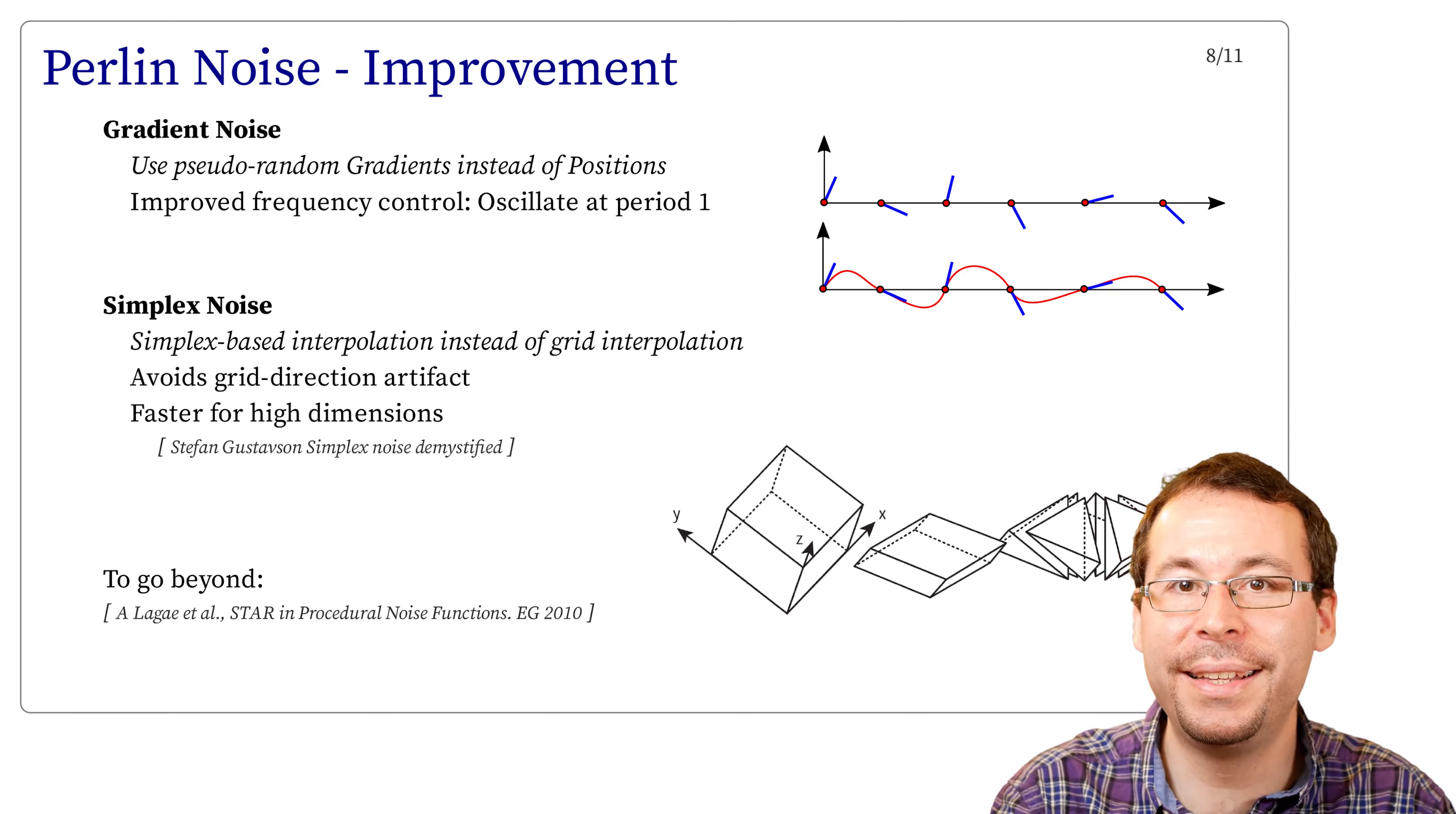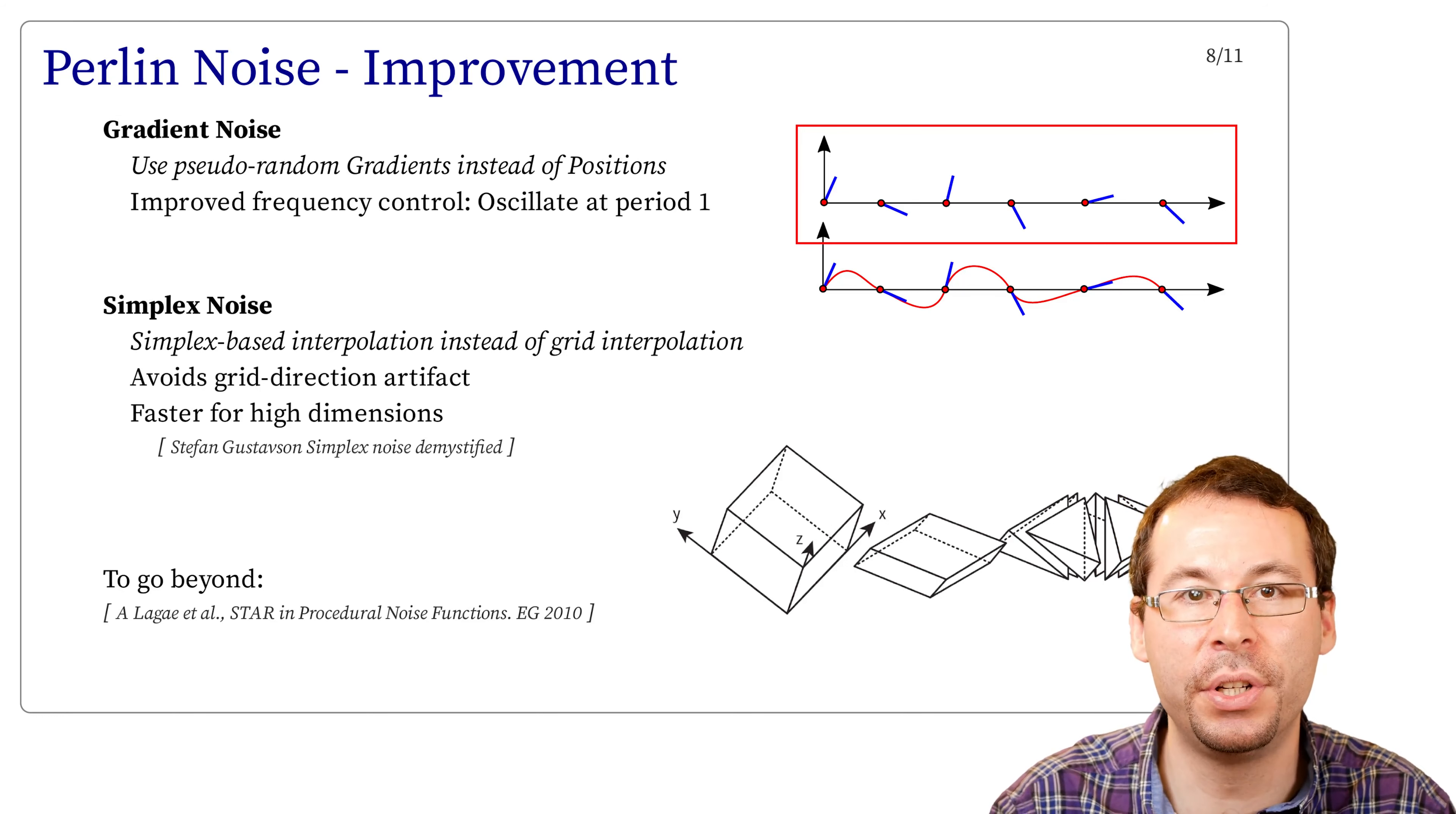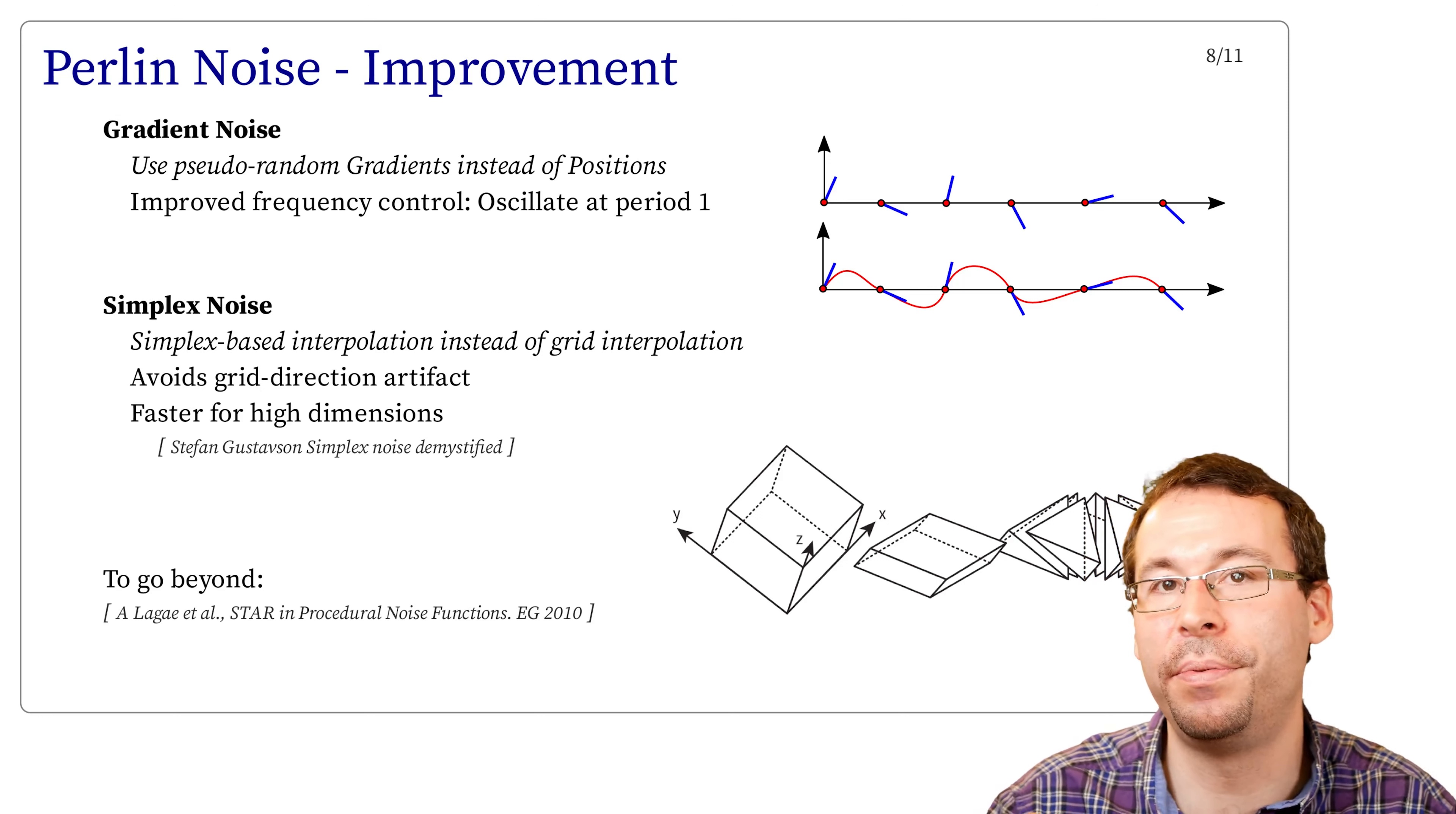As a final note, here is some improvements over the procedure I just presented. I showed previously a version of function f called value-based as we computed the value of f using the hash function. Actually, we can get better results using something called gradient-based noise. In this case, we set the value of the function to be 0 at every integer value, and use the hash function to set the value of the derivatives. This gives pseudo-random gradients instead of positions. And then we can interpolate similarly between the position and the gradients. This approach improves the frequency control of the function. We enforce a frequency of 1, while using position can lead to more variation of low frequency, and can lead to change of detailed appearance.